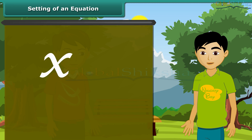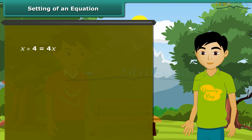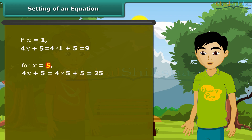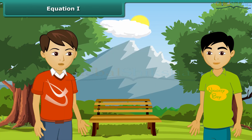I asked you to multiply the number. If X is 5, we get the answer as 25. Similarly, for X equal to 15, we get the answer 65. This is so simple. Can you explain what an equation is?